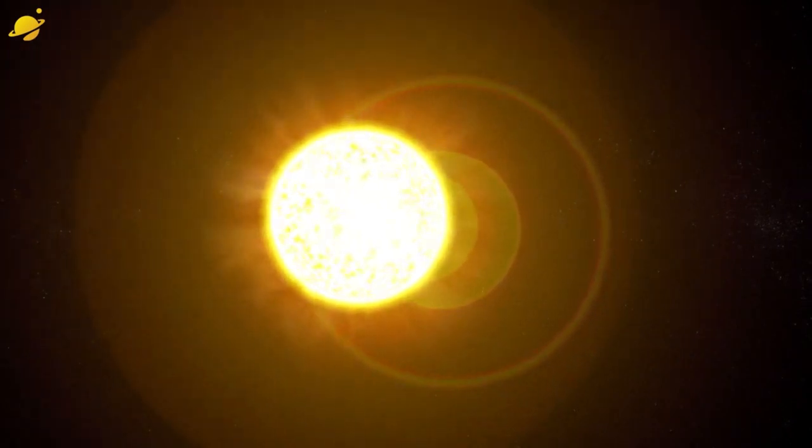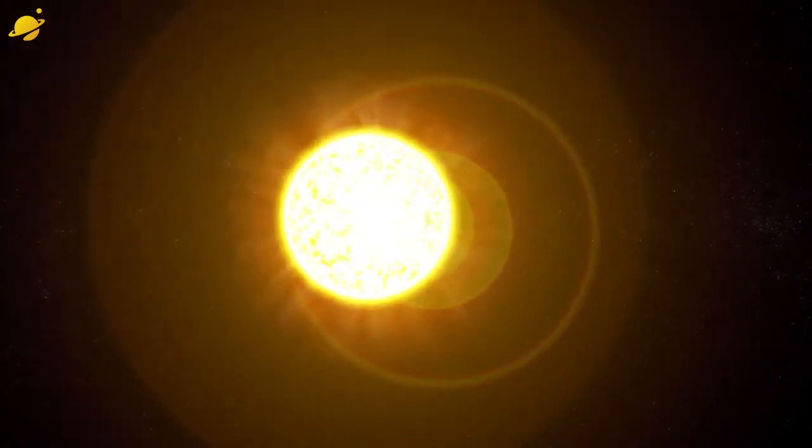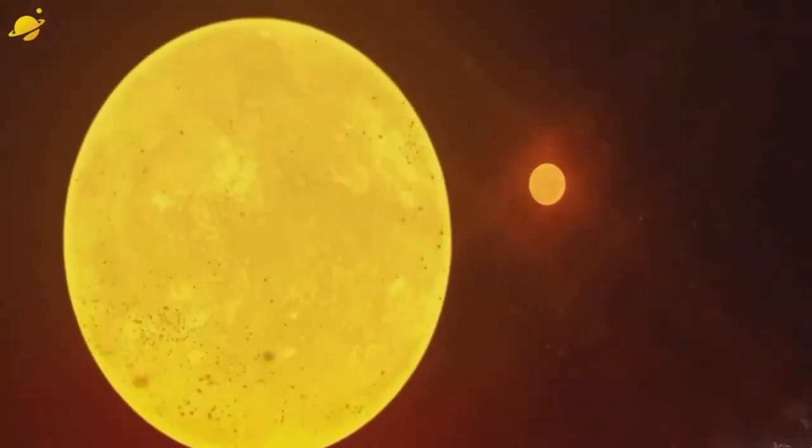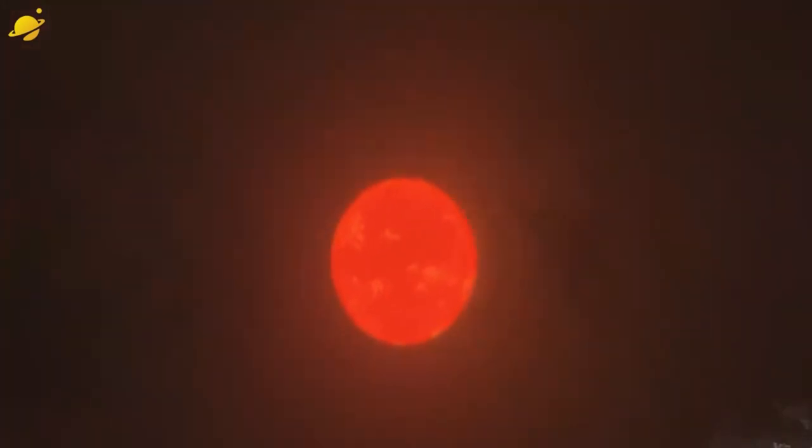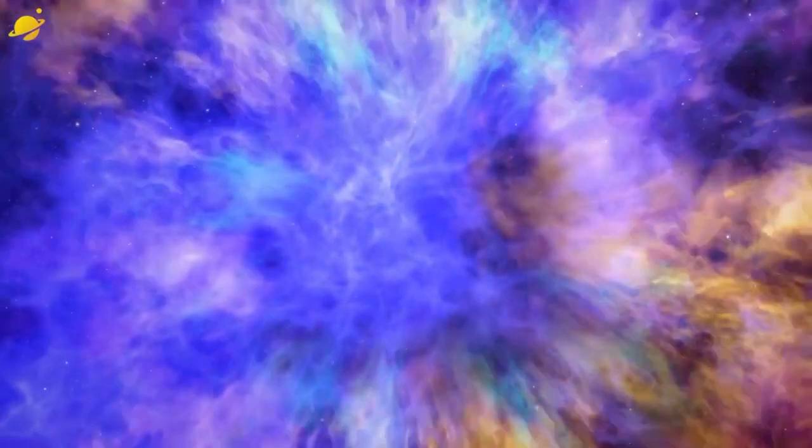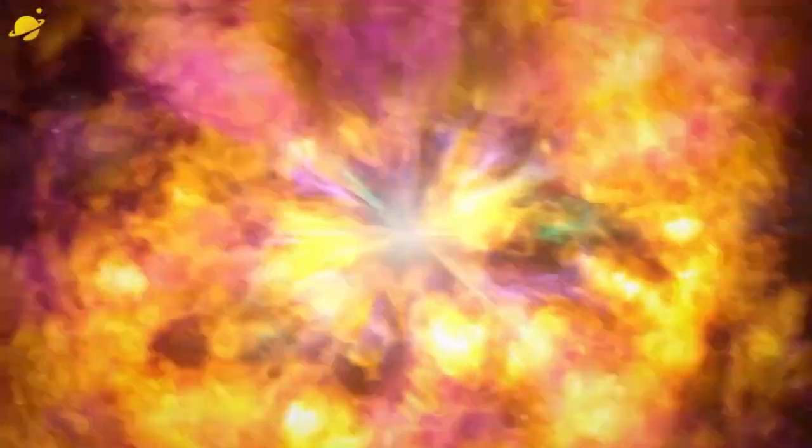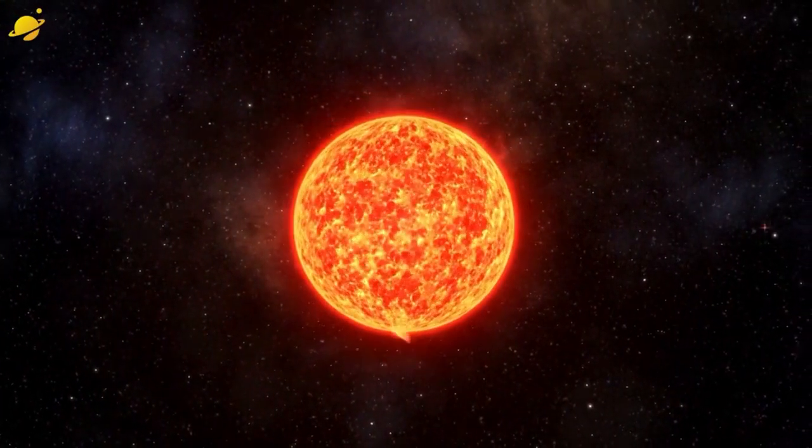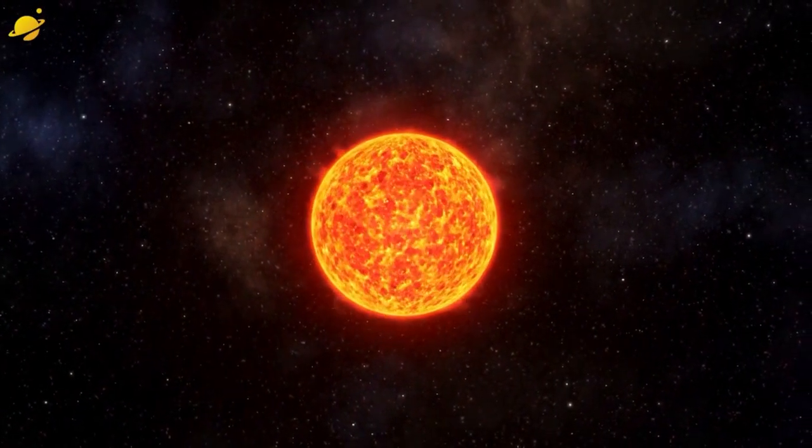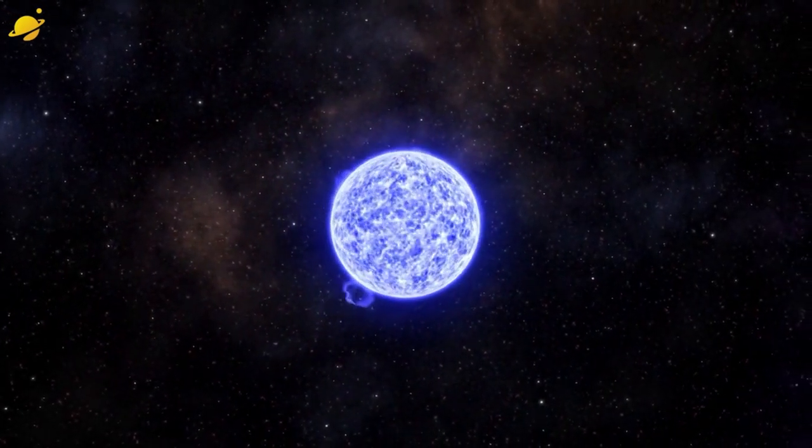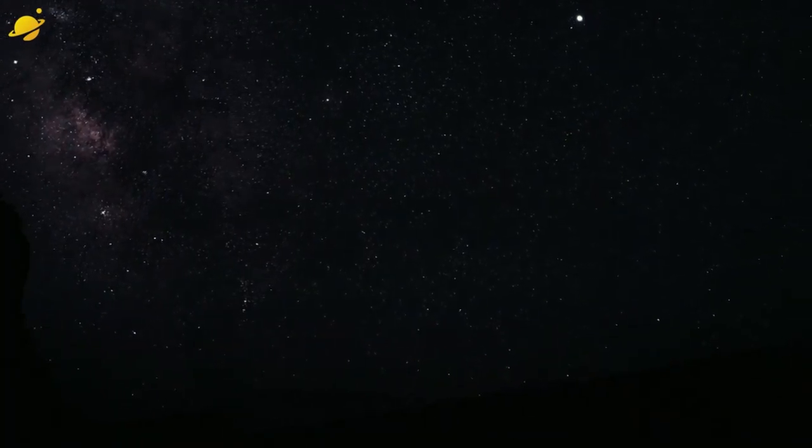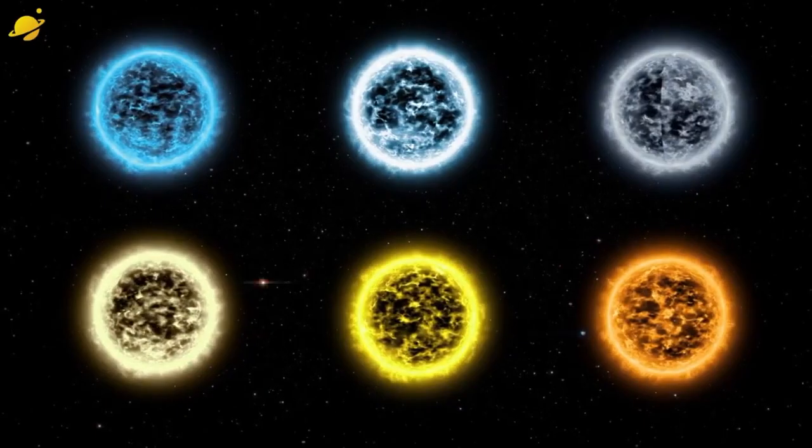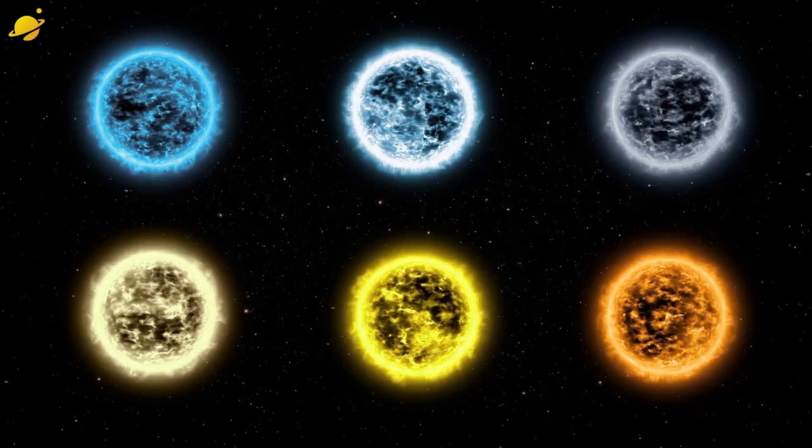This region was called the main sequence. Characteristics of main sequence stars depend primarily on mass and to a much lesser extent on age and initial chemical composition. The greater the mass of the star, the greater its temperature, radius, and luminosity, and the shorter its lifespan on the main sequence. The main sequence stage ends when there is too little hydrogen left in the star's core. Different stars behave differently after this. Conventionally, by spectral class, stars can be represented as follows.